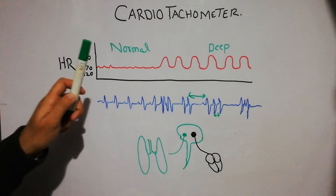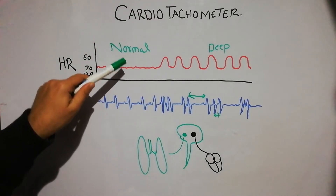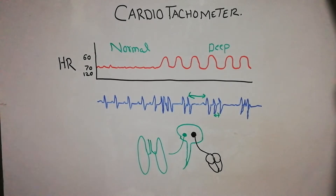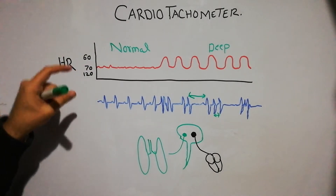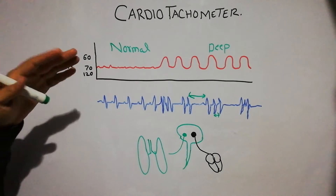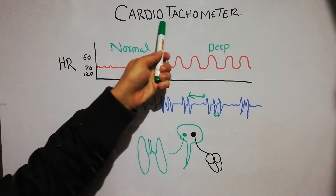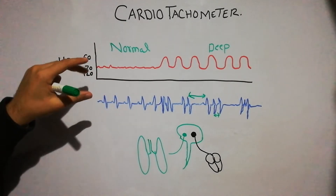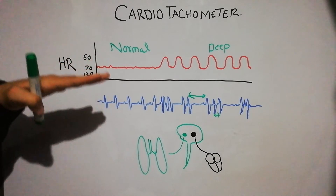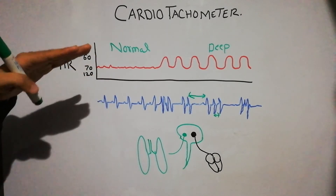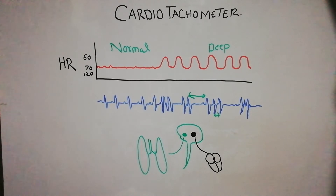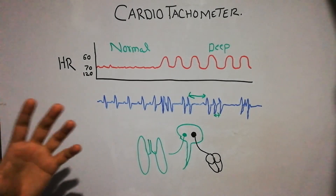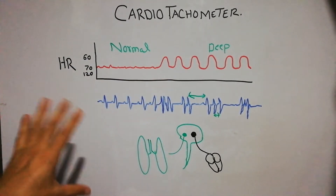Today we are going to discuss the effect of normal and deep breathing on the heart rate. The effect of breathing on the heart rate is recorded with the help of a machine known as the cardio tachometer. This machine records the heart rate in variation with the strength or depth of breathing, and the strip obtained from the cardio tachometer shows two components of breathing and two components of the heart rate.